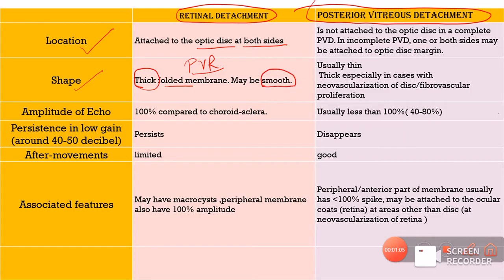The posterior vitreous detachment will usually be thinner. However, in certain cases where there is a vitreous hemorrhage, long-standing neovascularization, or fibrovascular proliferation on top of that vitreous detachment, then that vitreous detachment might also look thicker just like an RD.